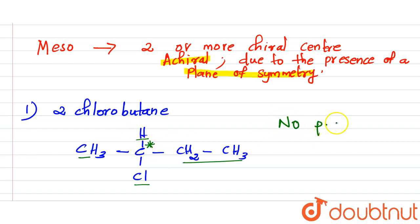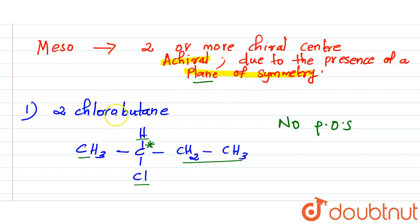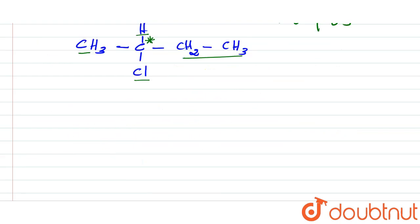So this is our chiral center, and also in this compound there is no plane of symmetry. We know that for a meso compound, there must be one plane of symmetry. Since 2-chlorobutane has no plane of symmetry, it is not a meso compound.